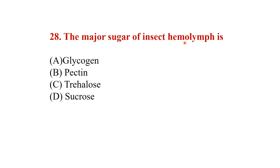The major sugar of insect hemolymph — options: glycogen, pectin, trehalose, or sucrose. The answer is trehalose.